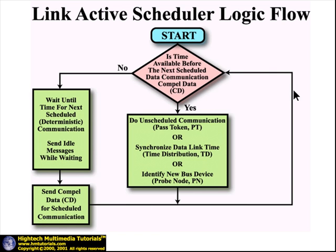When time is available for other activity before the next scheduled communication, the LAS will accommodate one of three different communications. These include passing the token with a PT message granting a device permission for unscheduled communications, issuing a time distribution using the TD message to synchronize all data link clocks on the segment, or issuing a probe node, or PN, message to determine if new devices have been added to the bus. This algorithm is repeated indefinitely so that all devices are given an equal opportunity for bus access.